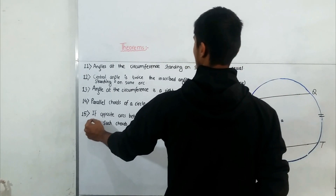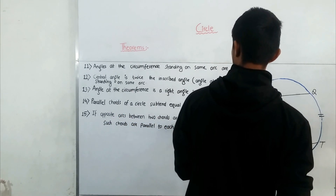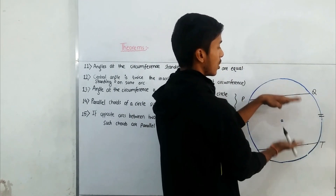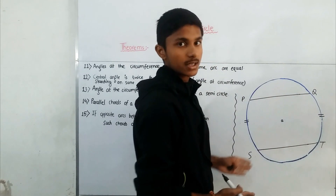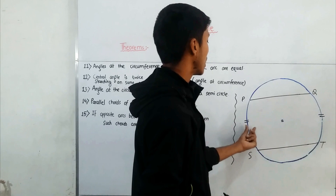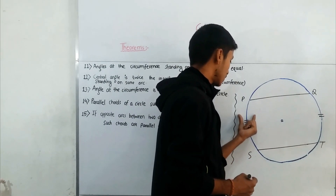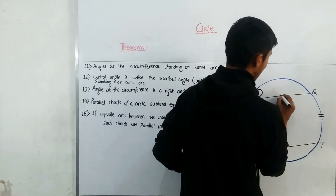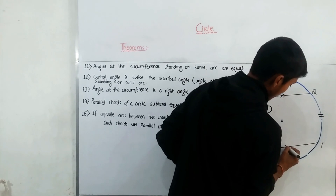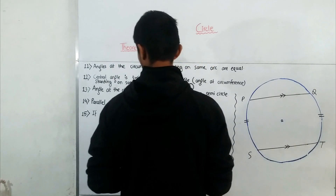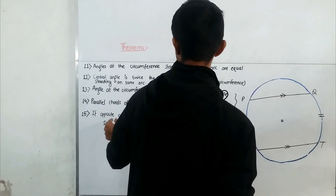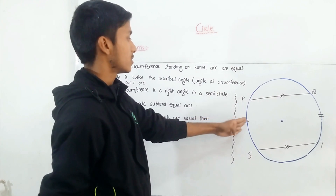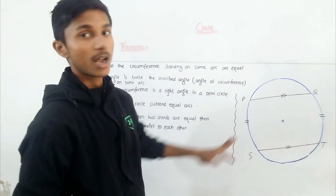Theorem 15 is the reverse of Theorem 14: if the opposite arcs between two chords are equal, then such chords are parallel to each other. The given condition is that arc PS and arc QT are equal. Therefore, the two chords PQ and ST will be parallel to each other.